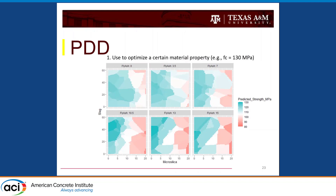As an example of how this looks: when optimizing the binder phase, you have micro-silica on the x-axis, slag on the y-axis, and fly ash organized by blocks. If you want a mix with 130 MPa, you can simply use this combination of materials — but as you can see, there are multiple combinations you could use, allowing you to account for the materials available in your region to achieve a given mechanical performance.